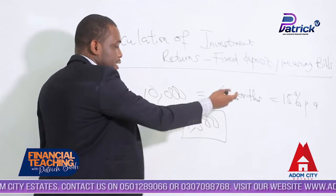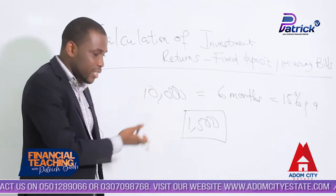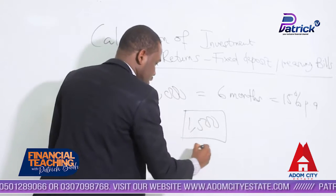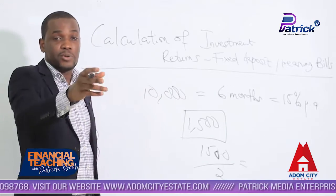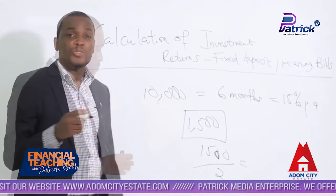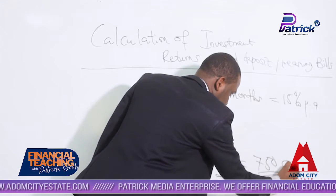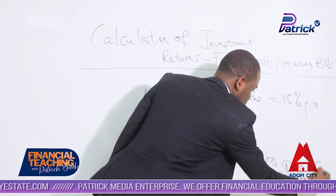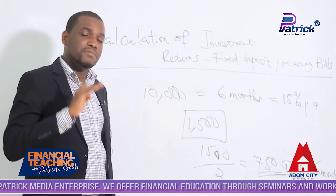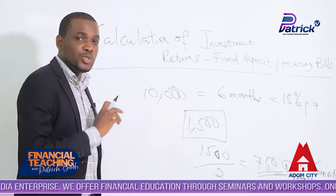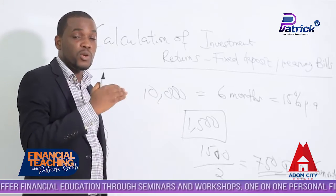The bank will calculate and give you six months out of the 12 months, which means it is going to be half of the annual interest. So it's going to be 1,500 divided by 2, which gives us 750 Ghana cedis for six months. So when you invest 10,000 at 15% per annum for six months, don't expect 1,500 — per this calculation, they are supposed to give you half, because you are not doing it for the whole year.